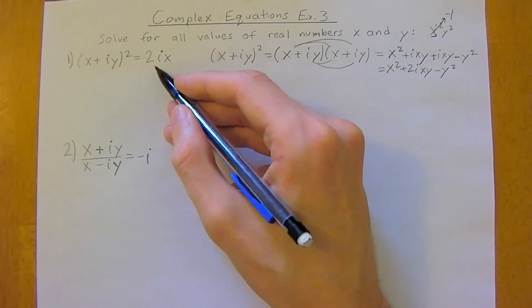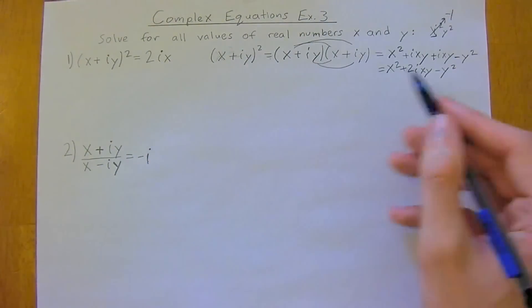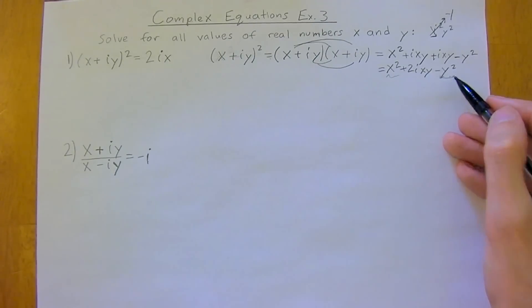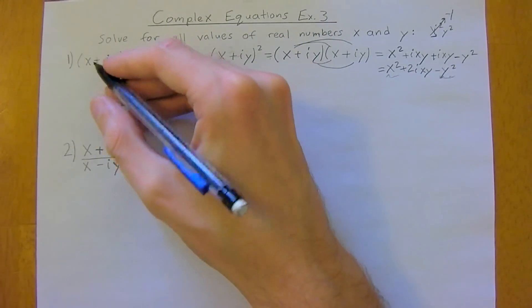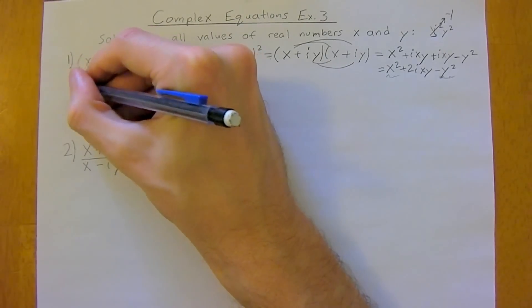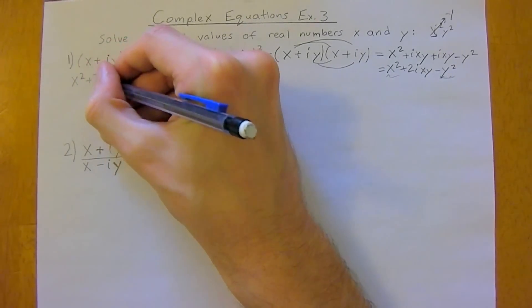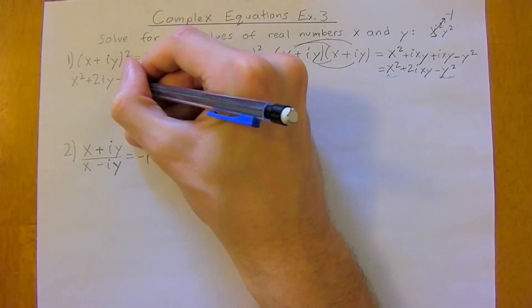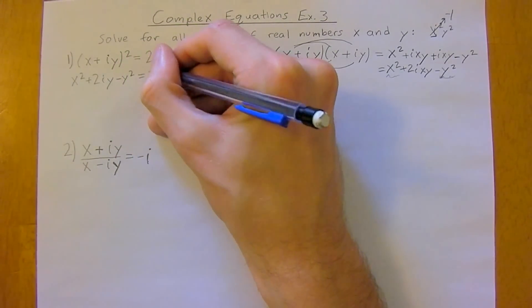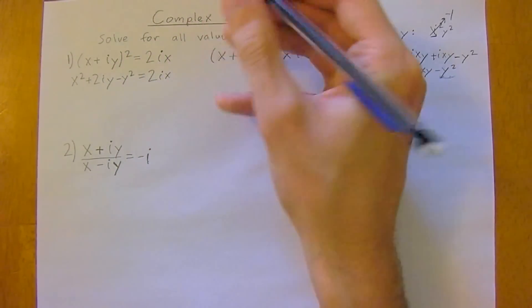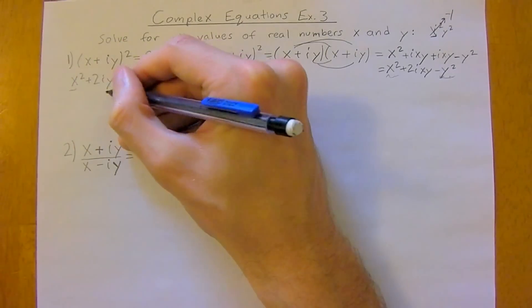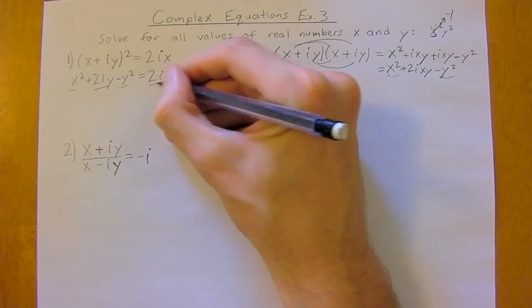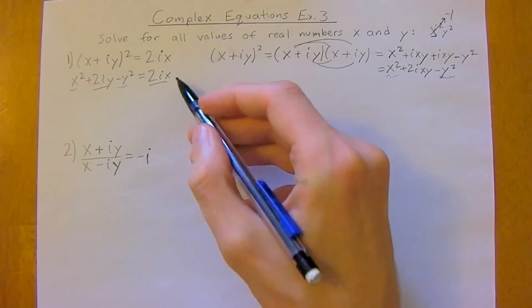Now we are just going to rewrite this equation and then group the terms — the imaginary terms with I and the real terms together. This is equation one, which is now equal to X squared plus 2IXY minus Y squared, which equals 2IX.